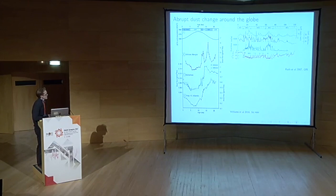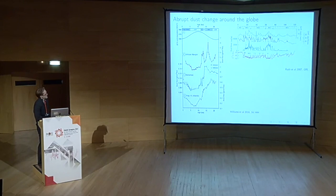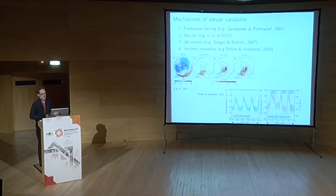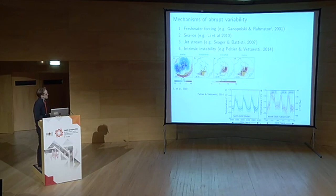There are other global dust records: a recent record from the Atlantic off the African coast showing abrupt variations coincident with Heinrich Stadial 1 and the Bølling-Allerød, and Chinese loess sequences showing co-variability with Greenland. Mechanisms for these abrupt events include: changes in ocean circulation via freshwater forcing, abrupt changes in sea ice distribution, changes in atmospheric circulation, and the possibility that glacial climate is intrinsically more unstable.